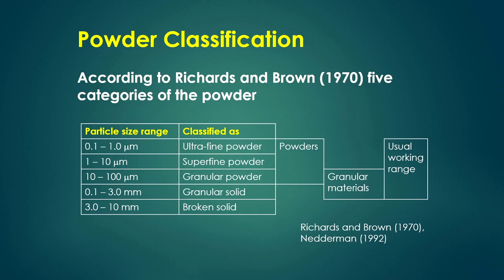According to Resnick and Brown (1972), powders are classified into five categories based on particle size: ultra fine powder (0.1–1 µm), super fine powder (1–10 µm), granular powder (10–100 µm), granular solid (0.1–3 mm), and broken solid (3–10 mm).